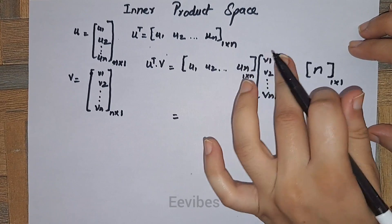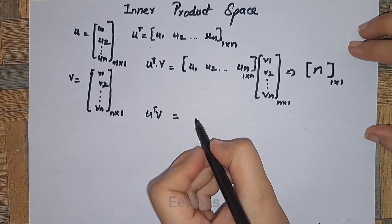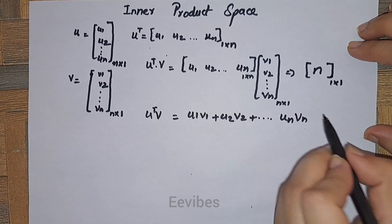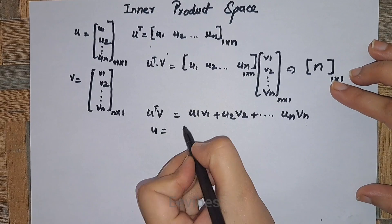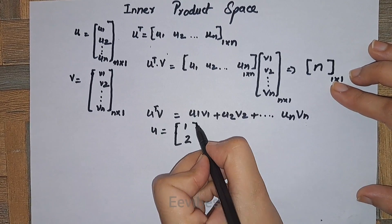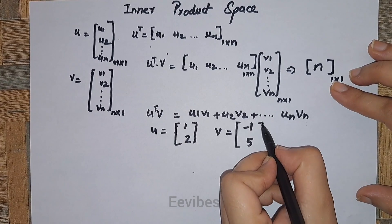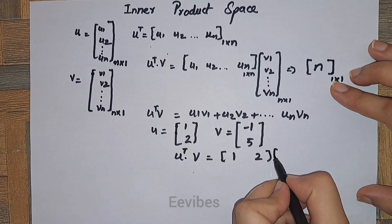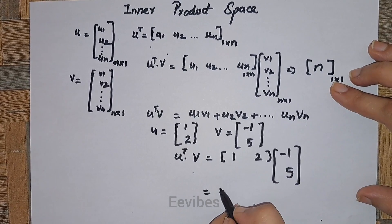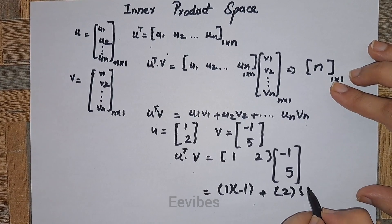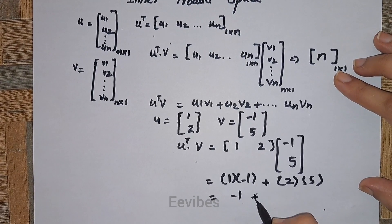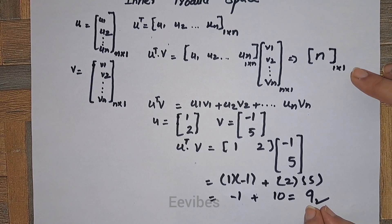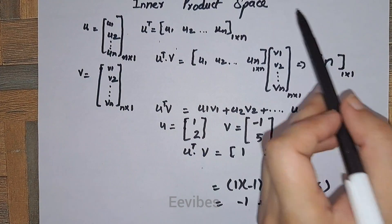This result is known as the dot product or inner product of the two vectors, found by multiplying corresponding components: u^T · v = u1·v1 + u2·v2 + ... + un·vn. For example, given u = [1, 2] and v = [-1, 5], we compute u · v = (1)(−1) + (2)(5) = −1 + 10 = 9, which is a real number with dimension 1×1.